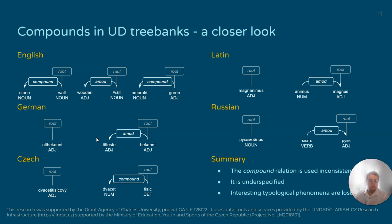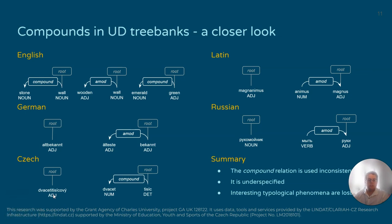In Czech, the compound relation seems to be used only for certain types of numeral dependencies. We see that dvacet tisíc and dvacet tisícovi both mean 20,000, and the two expressions just differ in syntactic environment. Just because the Czech spelling convention tells us that one form is spelled together means that these are both handled very differently, and the inner structure is completely lost in the first case.